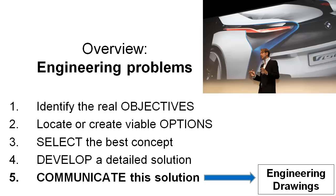Up until this point we've taught you how to create isometric sketches and how to generate orthogonal views of the objects you're trying to communicate to other people. In this stage we're going to start putting dimensions on these, and this is where they start to become formal engineering drawings.